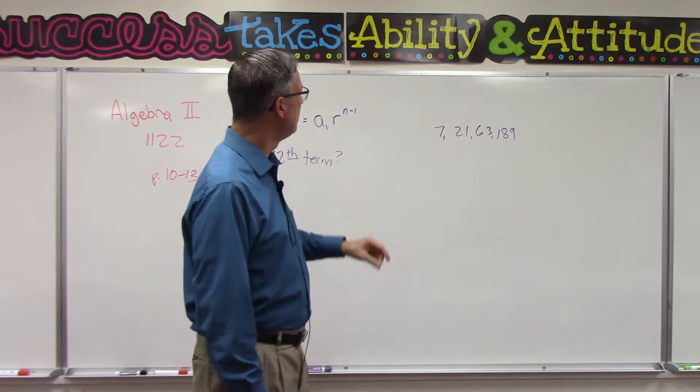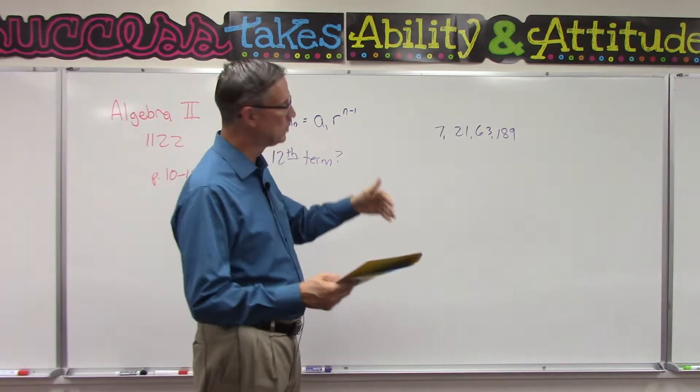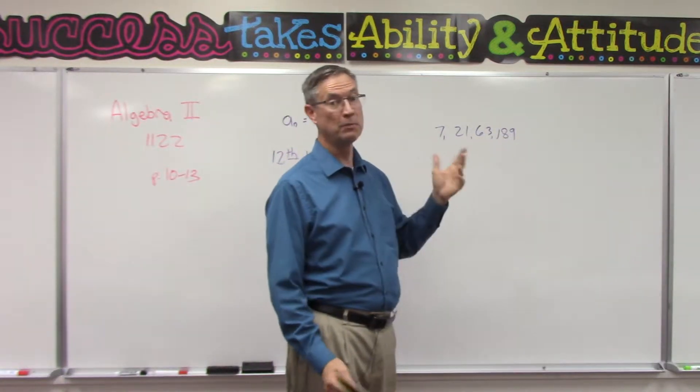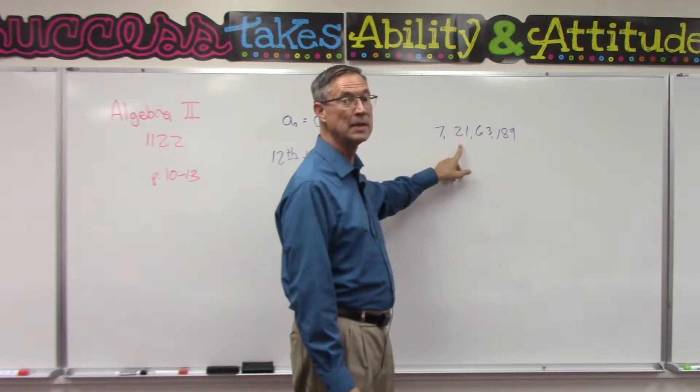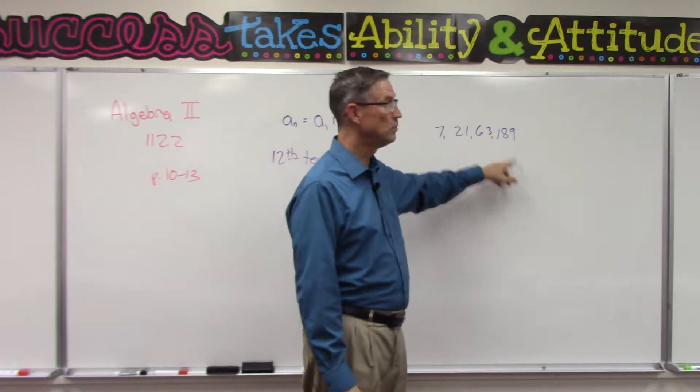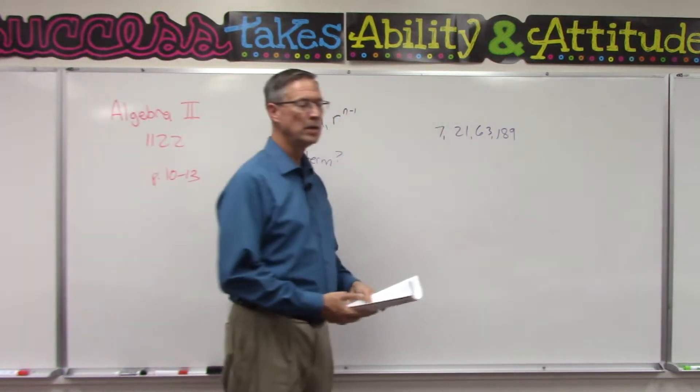For it to actually be a series or sequence, there has to be some number—could even be a fraction—that multiplied times the first term will give you the second term. Then that same ratio times the second term gives you the third term, the same ratio times the third term gives you the fourth term, et cetera. So the easy way to do that is take the second term and divide by the first one.